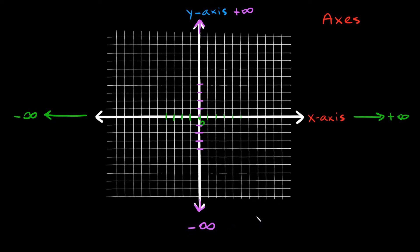One last thing to point out about the axes is this spot right here where they intersect — this is called the origin. A lot of times you're going to see the letter O next to this point, because it's denoting that that is the origin.